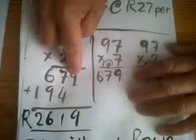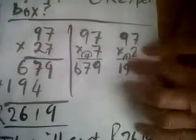You write that one underneath the 7 that you worked. Next one: 2 times 97, so 2 times 7 is 14, carry the 1. 2 times 9 is 18, plus 1 is 19.